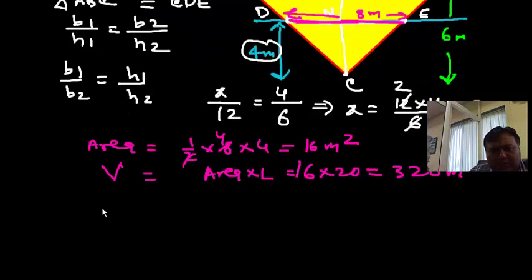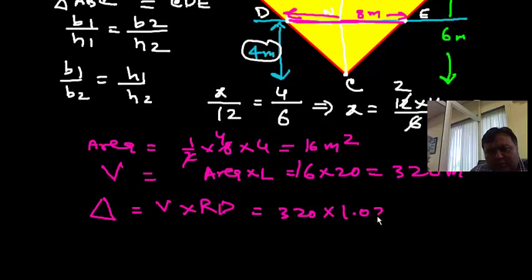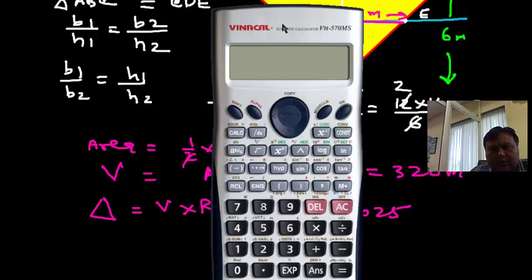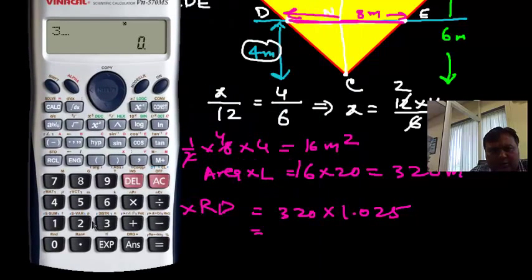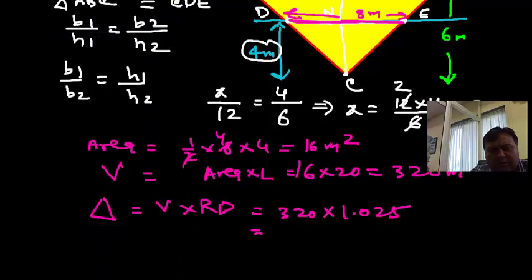Now the displacement is volume into relative density, so the volume is 320 and relative density is 1.025. So just need to do the multiplication - 320 multiplied by 1.025, I get 328, so the value is 328 ton, that is the displacement.